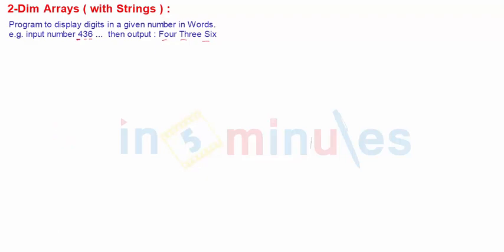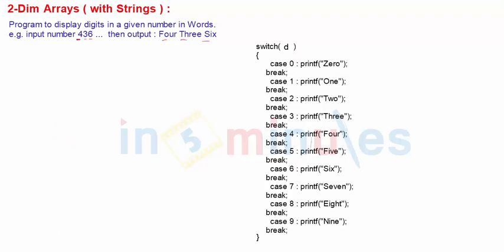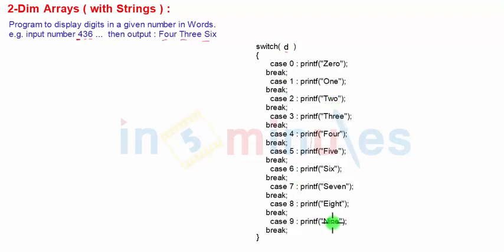The previous logic was like this: we input a digit D, then write a switch statement — switch(D). If D is 0, print 'zero'; if D is 1, print 'one'; if D is 2, print 'two', and so on up to 9. This results in almost 10 switch-case statements, and overall around 20 lines of code.